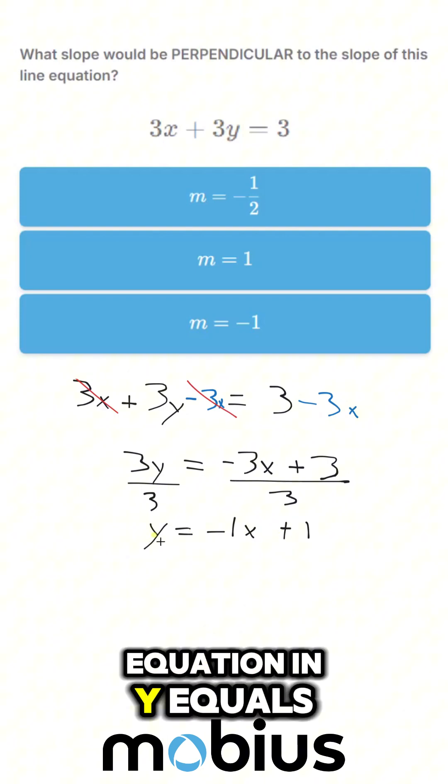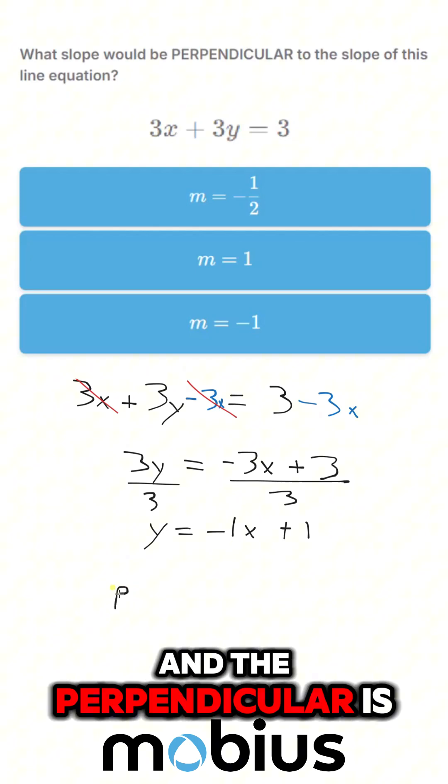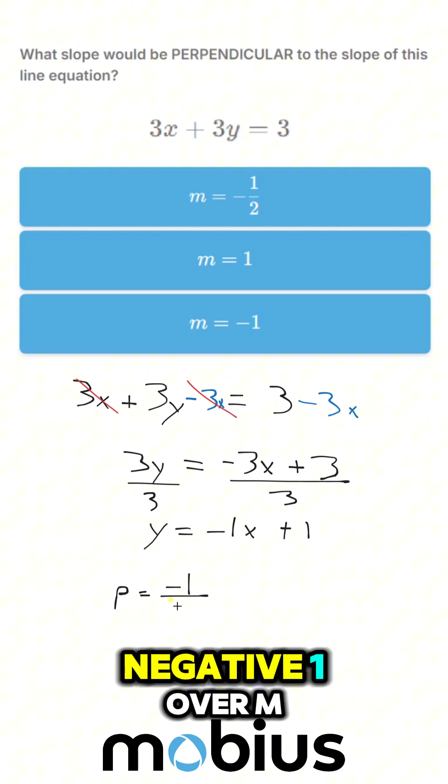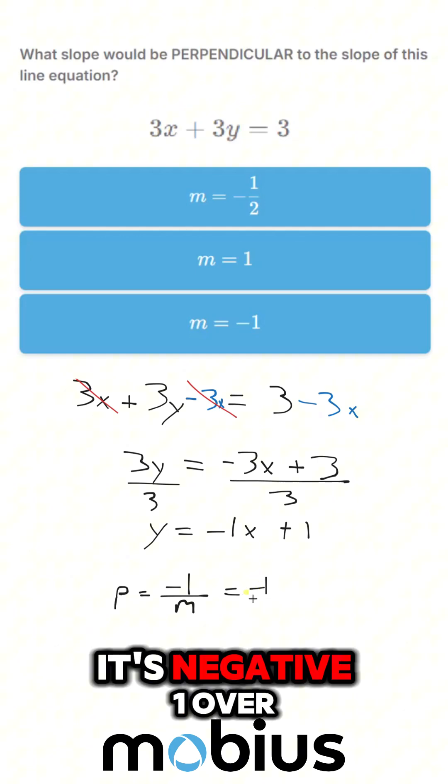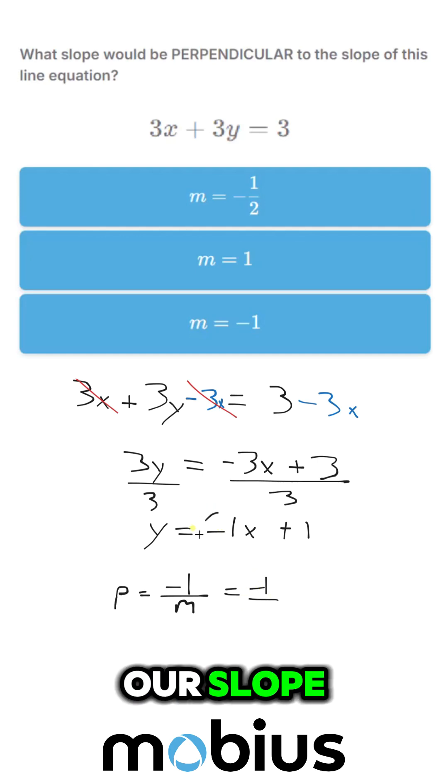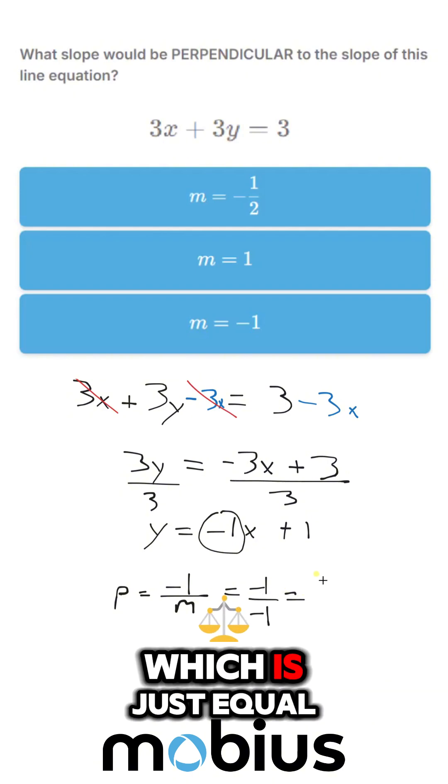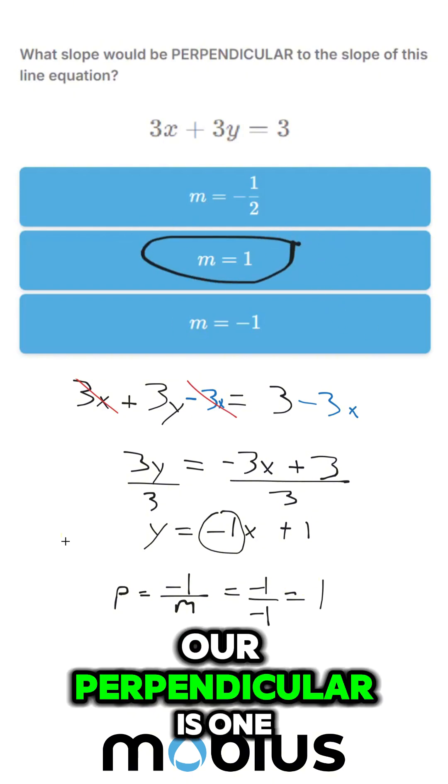Now we've got the equation in y equals mx plus b form, and the perpendicular is equal to the negative inverse, negative 1 over m. So in this case, it's negative 1 over our slope, this guy here. Negative 1 over negative 1, which is just equal to a value of 1. So the slope of our perpendicular is 1.